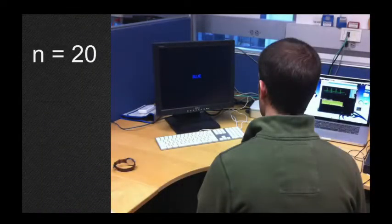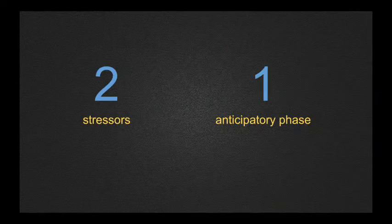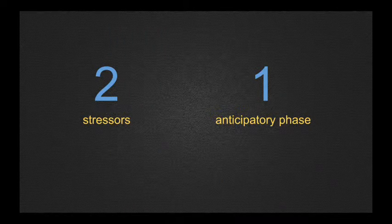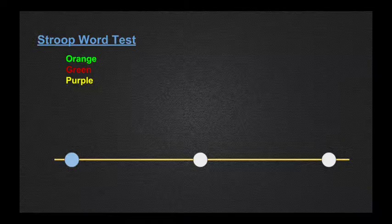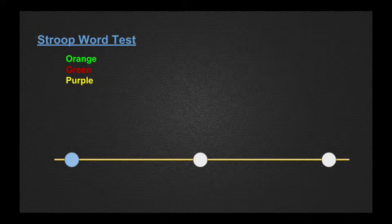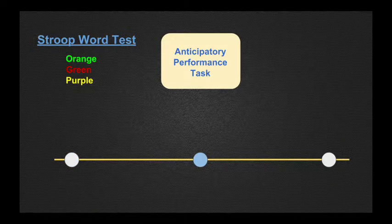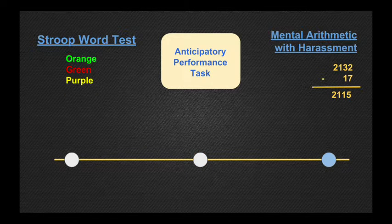The study consisted of 20 users, where we applied two stressors and an anticipation phase. First is the Stroop test, where participants must say the color shown instead of the text. Next, participants were asked to wait for an imminent math stressor. Finally, participants had to continuously subtract a number from a baseline.